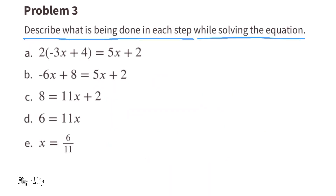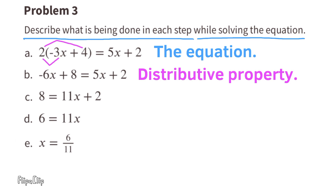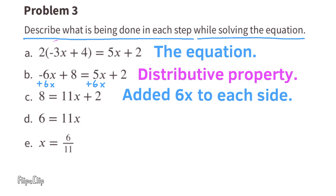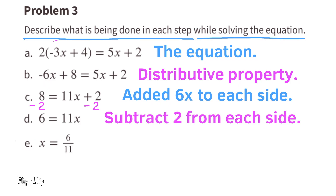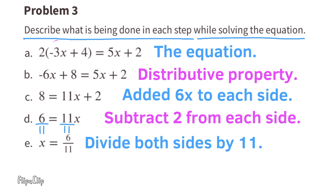Problem number 3: describe what is being done in each step while solving the equation. Step A is the original equation. Step B used the distributive property: 2 times negative 3x to get negative 6x, and 2 times positive 4 to get positive 8. Step C added 6 to each side — negative 6x plus 6x cancels out, and 5x plus 6x equals 11x. Step D subtracted 2 from each side — 8 minus 2 is 6, and positive 2 minus 2 cancels out. Step E divides both sides by 11: 6 divided by 11 is 6/11, and 11x divided by 11 equals x.